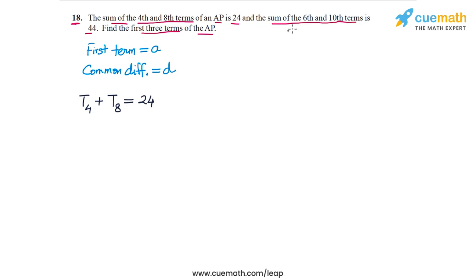We are also told that the sum of the 6th and 10th terms, so T6 plus T10, is equal to 44. Now we will write each of these four terms in terms of A and D using the formula: the Nth term is A plus N minus 1 times D.